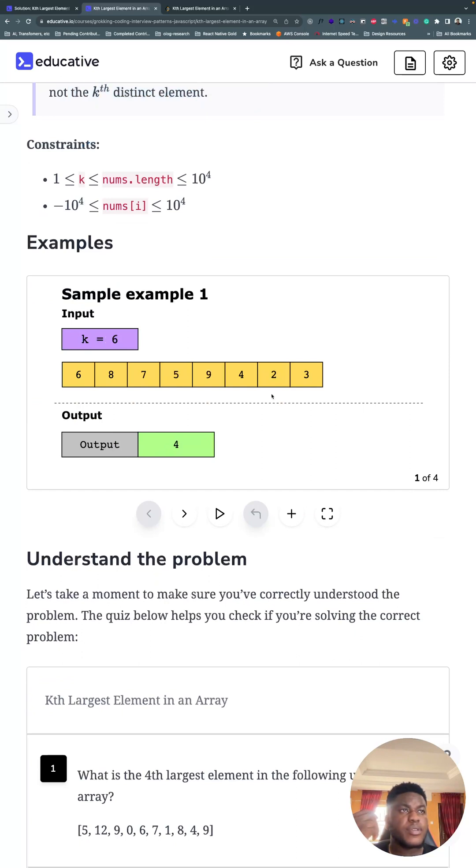So in this case, k is 6. We have this number. What's the 6th largest number in this array as it is right now? And that is 4 because we go from 9, 8, 7, 6, 5. So I've counted 5 numbers and I'm at 5. The 6th number is 4. That's why we have 4 here.